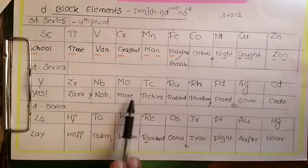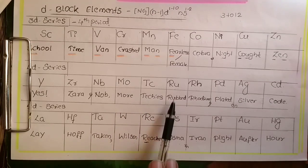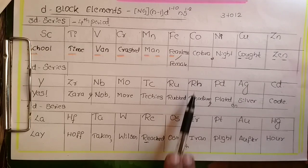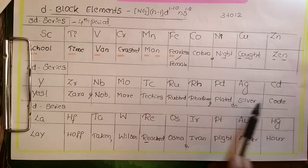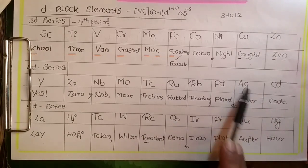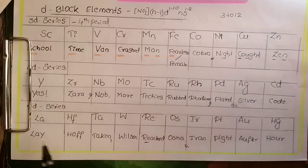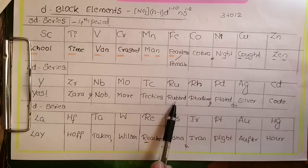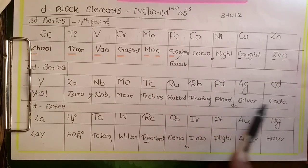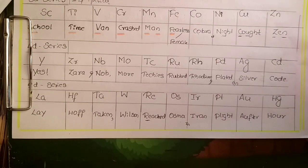Technetium - techies, rhodium for Rh, and plated on silver code. Silver means argentum. Repeating: yes Zara and no more techies rubbed rhodium and plated on silver code. Isn't it easy? Next comes the 5d series elements.